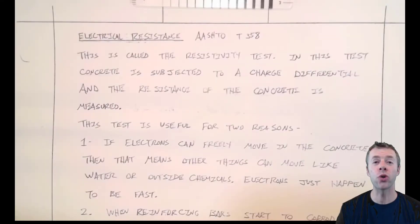Welcome everybody to part three of the three-part series on quality control testing of hardened concrete. Today we're going to talk about electrical resistivity. Electrical resistance, AASHTO T358. This test is often called the resistivity test.